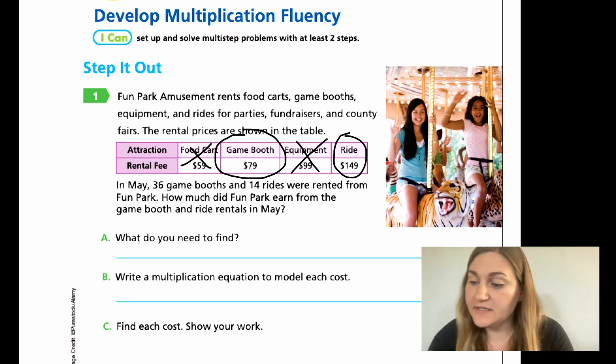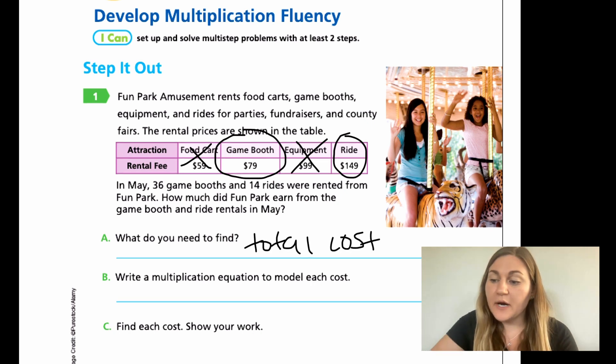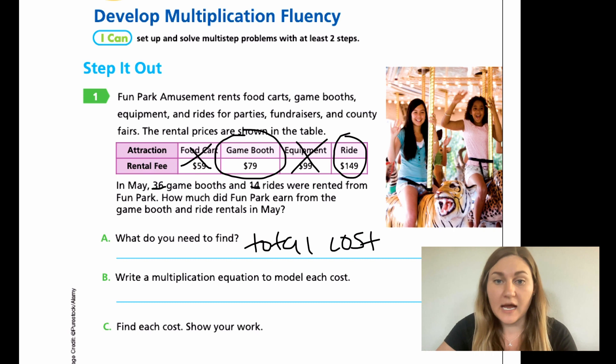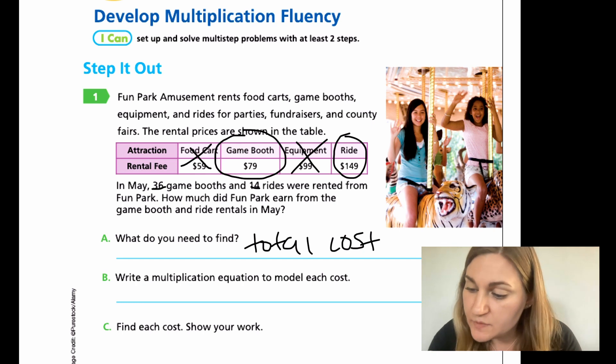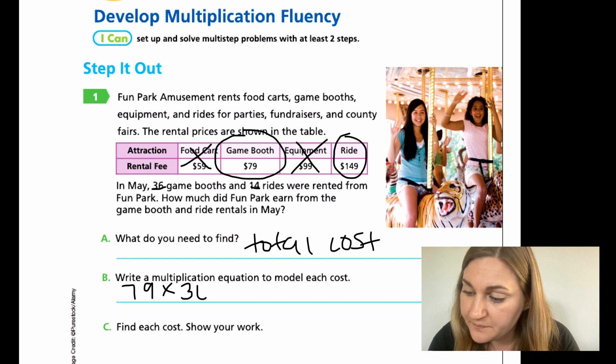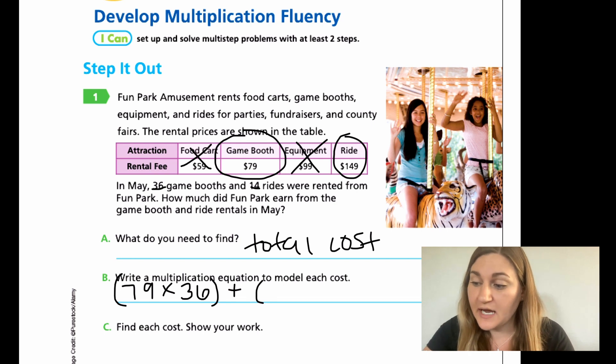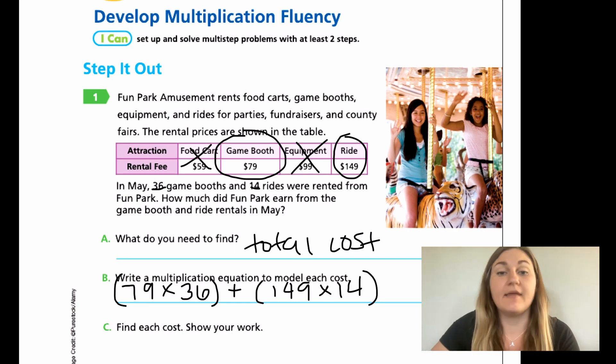So what do we need to find? We need to find the total cost. We want to write a multiplication equation to model each cost. So it's important to remember that I'm doing 36 game booths and 14 rides. I need the price of the game booth, 79, multiplied by 36 for 36 total game booths. So I'm going to do 79 times 36. I'm going to multiply that and then add it to the total of the next multiplication, which is 149 for the ride multiplied by 14 rides. So 149 times 14. I'm going to find those two multiplication products and then add them together.